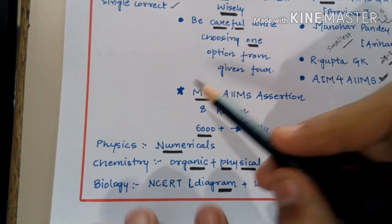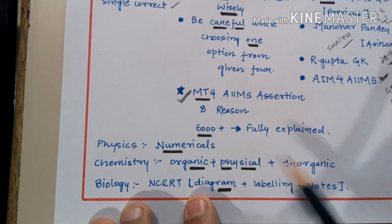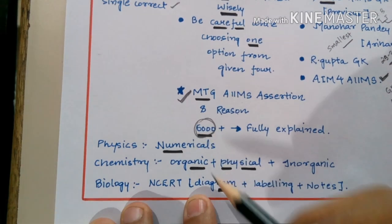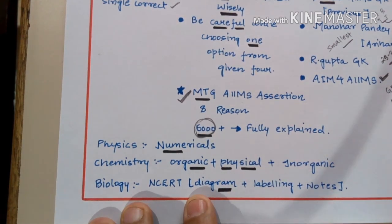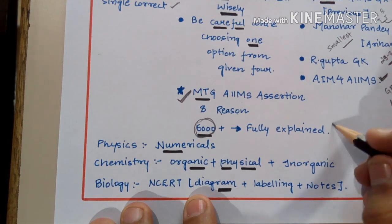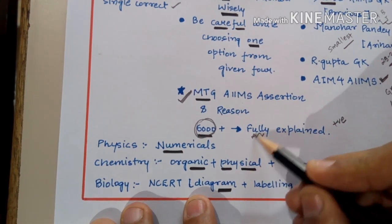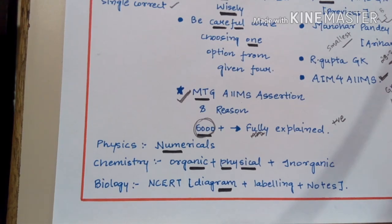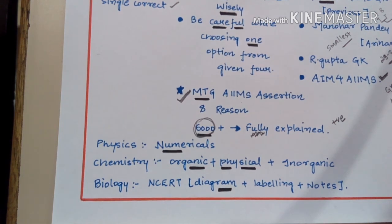For assertion and reason practice, the best book is MTG. MTG has an AIIMS assertion-reason book with approximately 6000-plus questions for physics, chemistry, and biology. The most positive point of this book is that it is fully explained, so you can easily analyze a statement and check whether it is right or wrong through its explanations. It will also clarify your theory concepts, being a very well-elaborated book.